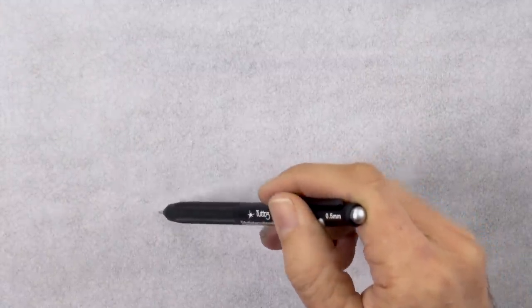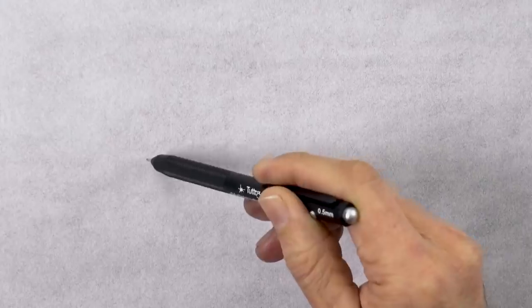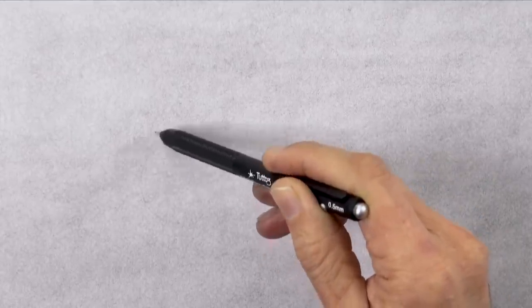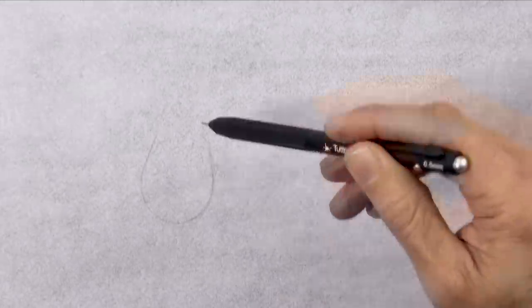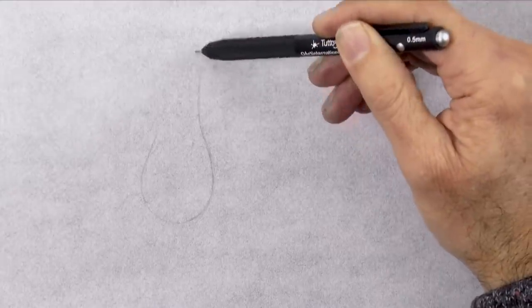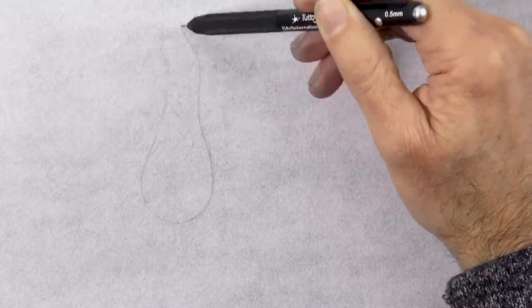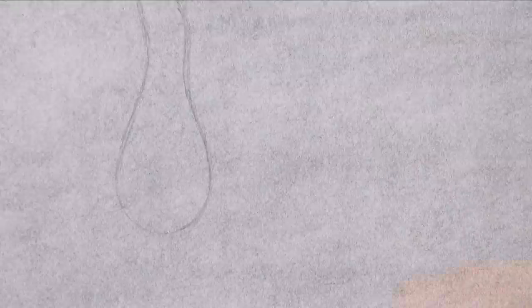Very good! Now with a pencil, or in this case a mechanical pencil, I'll draw the shape of the drop. It will be round on the bottom and then stretching up a little bit, and we will also draw a path that zigzags a little bit.